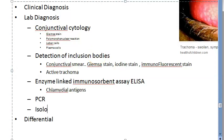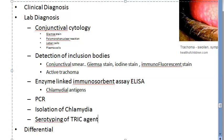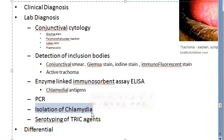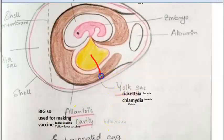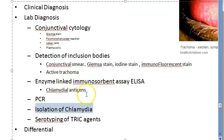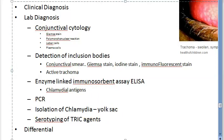Additional lab methods include PCR - polymerase chain reaction - which works at the DNA level. Isolation of Chlamydia is possible by yolk sac inoculation method, as Chlamydia, Rickettsia, and Japanese encephalitis virus can all be grown in the yolk sac of an egg. You can also use tissue culture and standard single-passage McCoy cell culture, which requires at least three days.